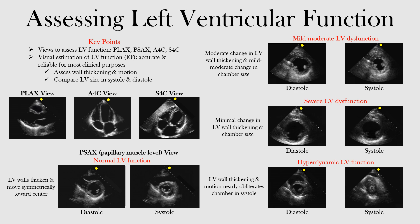The views we can use are the parasternal long axis view, the parasternal short axis view, the apical four chamber view, and the subcostal four chamber view. All of these views we've looked at in the past, so if you haven't gone through those videos you can go back and look at them in detail where we examine the structures visible in each.